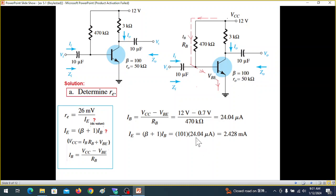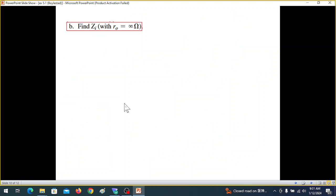IB found, now you can find IE from here. So IE is beta plus 1 IB. Beta is 101, then 101. This is given, beta is given here as 100. And IB, so IE is 2.428 milliampere. And now we can find RE. RE is 26 millivolt over IE, 26 millivolt over this value. So it is 10.71 ohm. So this is the first part. We have determined the value of RE.